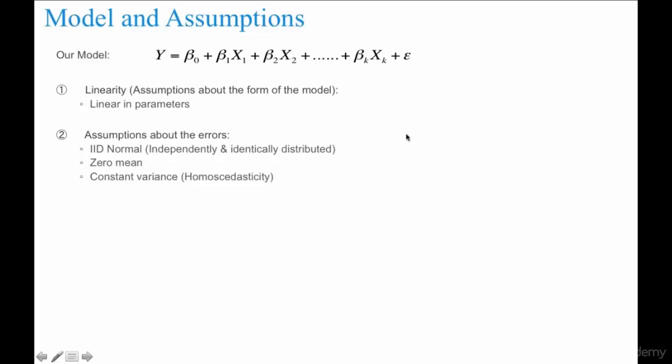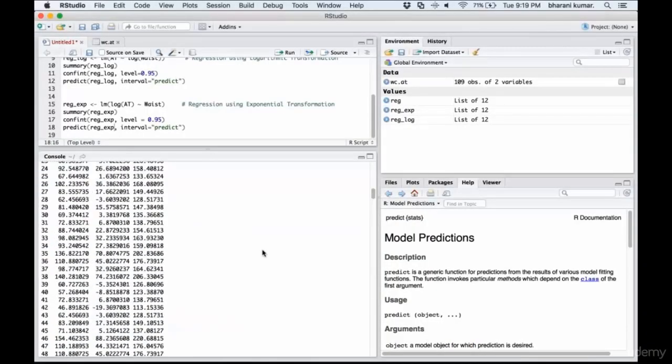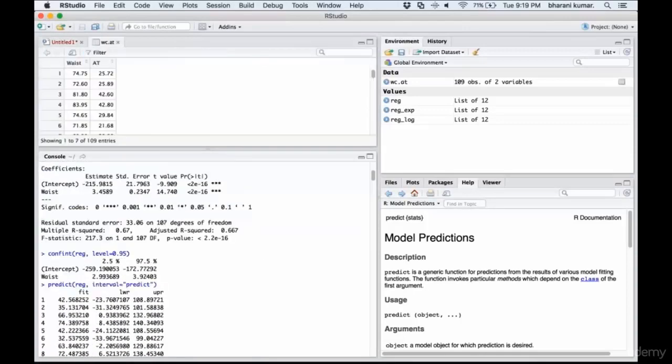As I've already shown you in this prediction equation, you'll have multiple errors. Quick explanation. So you have this prediction equation, which is adipose tissue equals, using these values, minus 215.9815 plus 3.4589 multiplied by waist.